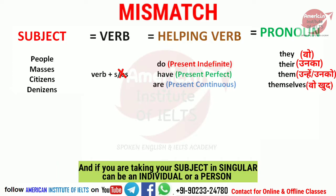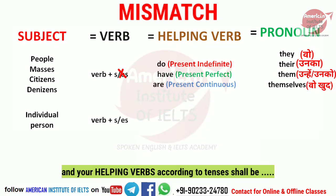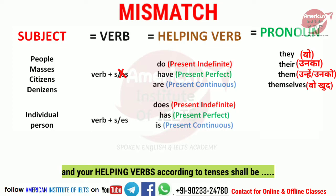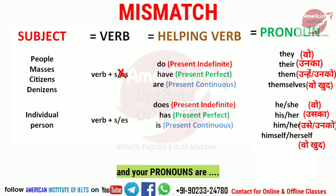If you are taking your subject as singular type, your subject will be 'individual' or 'a person'. Then you need to add 's' to the verb when using present indefinite tense. For negative sentences, use 'does' in present indefinite, 'has' in present perfect, and 'is' in present continuous. The pronouns to use are: 'he'/'she', 'his'/'her' meaning 'uska', 'him'/'her' meaning 'usko', and 'himself'/'herself' meaning 'wo khud'.